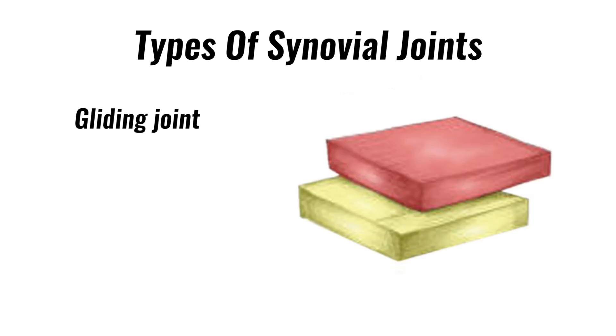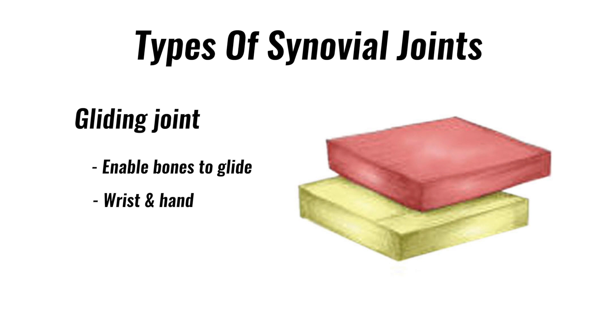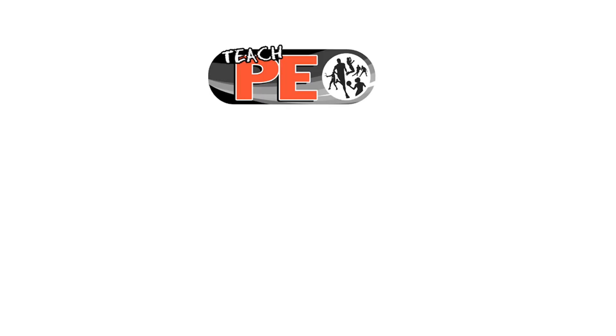Gliding joints enable bones to glide against each other and are found between the carpal joints in the hand. For more information or to test yourself with our interactive quizzes, visit teachpe.com.